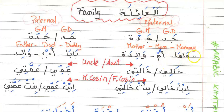When it comes to 'mom,' students often ask which word to use. It's the same as in English: mother, mom, and mommy correspond to walida, um, and mama. Walida is more formal, um is average and used for 'my mom' as ummi, while mama is the informal version.